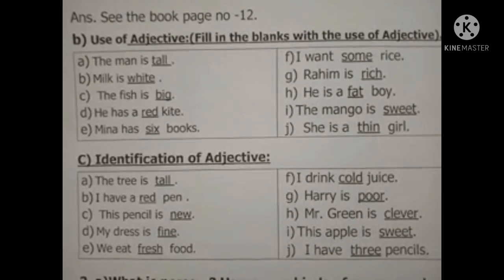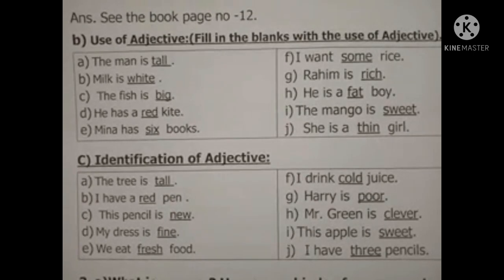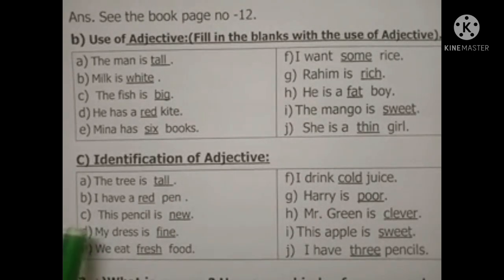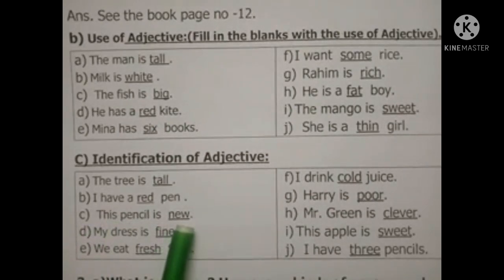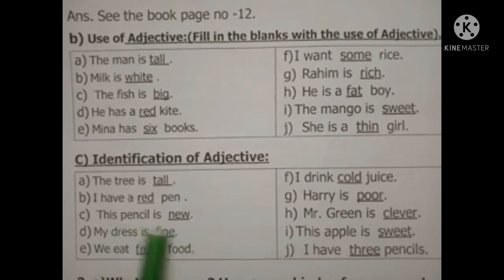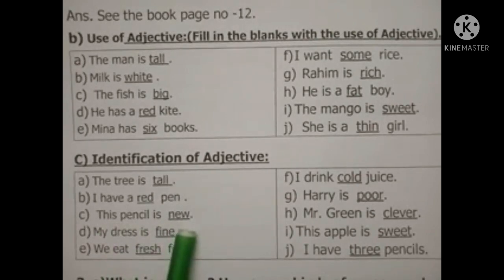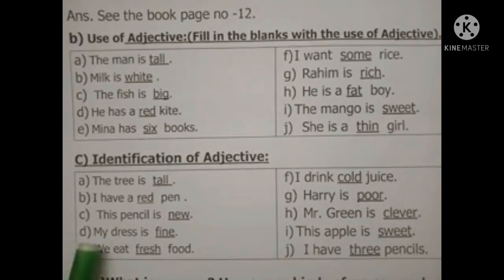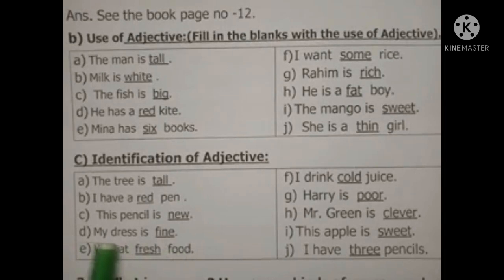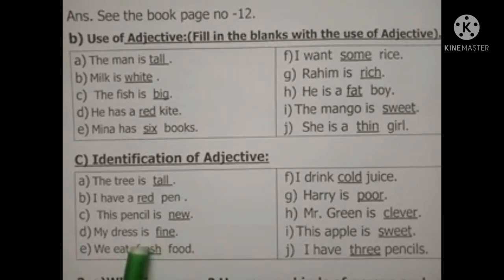দেখো (C) নম্বরে আছে: 'This pencil is new' — এখানে adjective হচ্ছে 'new'। (D) নম্বরে আছে: 'My dress is fine' — মানে আমার পোশাকটি সুন্দর। এখানে 'fine' হচ্ছে adjective। Fine মানে সুন্দর।